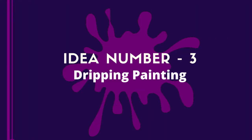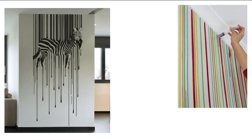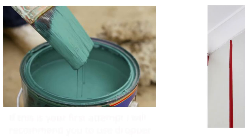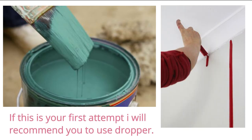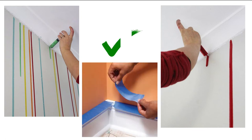Idea number three: dripping painting. This is again a very good idea for an accent wall, but you have to be very careful while doing this type of painting. Because if it is not done correctly, it can be horrible. Aap paint ko dropper ya brush se drop kar sakte hai. Agar aapka ye first time hai, to main aapko dropper recommend karungi. Aapne required paint color se drop karna hai. Dhyan rakhiye ki dropping start karne se pehle, aap skirting aur floor ko puri tarha se secure kar lein. Is type ki painting mein aap different different colors use kar sakte hain, jo ki bohat hi vibrant aur fresh look dete hai.